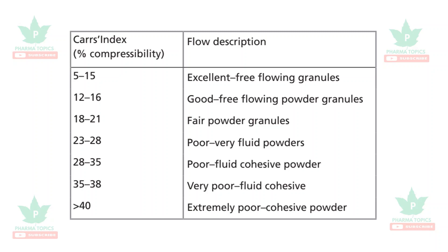Carr's Index is an index of the compressibility of powders. The flow description is determined by the Carr's Index: 5–15 is excellent free-flowing granules; 12–16 is good free-flowing powder granules; 18–21 is fair powder granules; 23–28 is poorly fluid powder; 28–35 is poor fluid cohesive powder; 35–38 is very poor fluid cohesive powder; and greater than 40 is extremely poor cohesive powder. Remember: when the value is less, the powder has better free-flowing property.